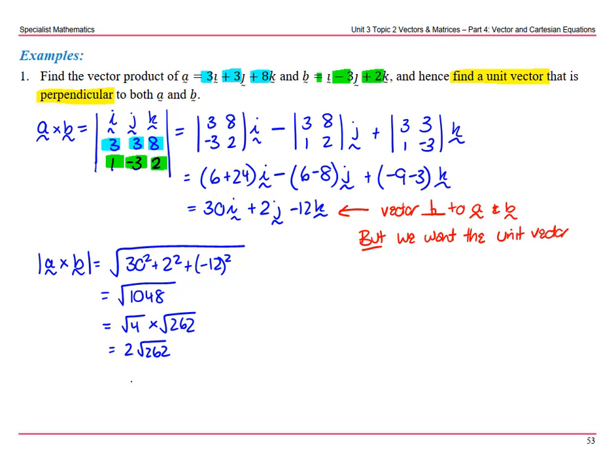Therefore my unit vector perpendicular to a and b will equal 1 over 2 square root of 262 times by that vector. Multiplying by 1 over the magnitude of the vector makes it a magnitude of 1.